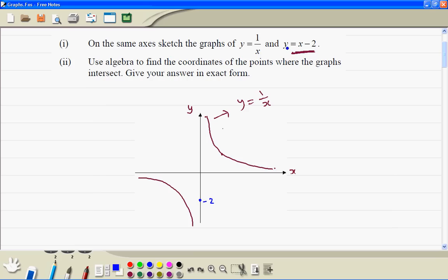If you put y is equal to 0, then x is equal to 2. So that point is somewhere there. Now we join these two points. Straight line.